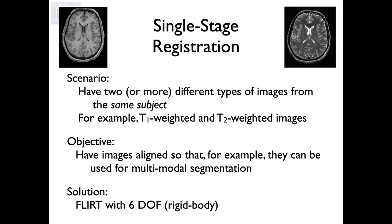What I'll talk about now is single-stage registration. That's a particular scenario where we have two different images from the same subject. Here the scenario is one T1-weighted image and one T2-weighted image. We need to think about how we set up the registration to solve this problem, and particularly how we make choices about the different options we've discussed previously.